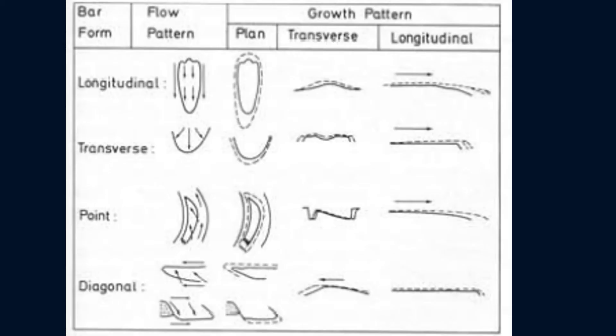Bars can be important to determine the direction and type of flow. For example, longitudinal bars are elongated bars that develop parallel to the flow direction. They are made up of coarse-grained, poorly sorted sediment. Although there are many types of bars, it is important to understand that channel bars are an important type of deposition within fluvial environments and can indicate the type of sediment and deposition occurring in that specific location.